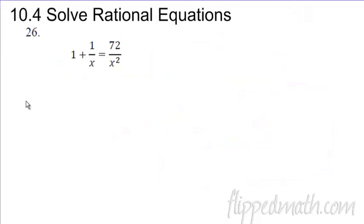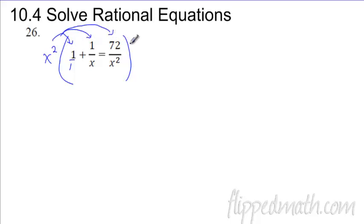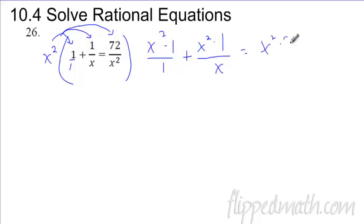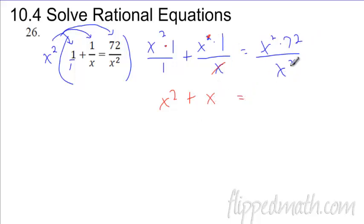Moving to 10.4 — solving rational equations. One strategy: multiply everything by the LCD to eliminate fractions. This equation has x and x-squared in the denominators, so multiply everything by x-squared. Distributing: x-squared times one gives x-squared; x-squared times one over x cancels one x leaving just x; and x-squared times seventy-two over x-squared cancels leaving seventy-two. Now you have no fractions — just x-squared plus x equals seventy-two.